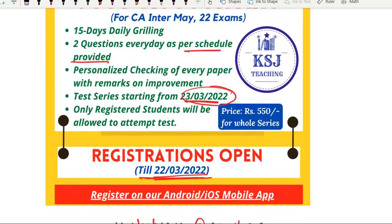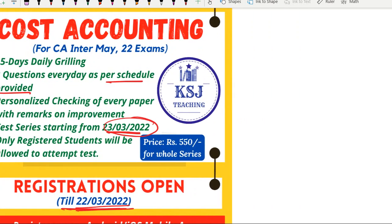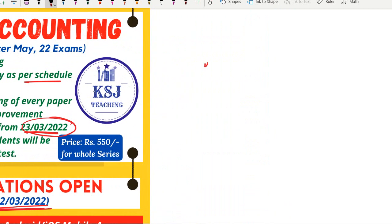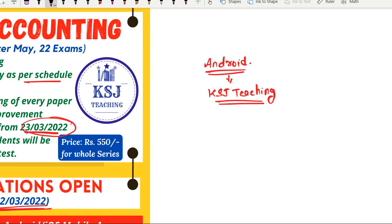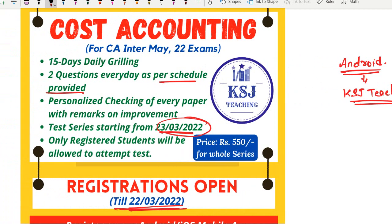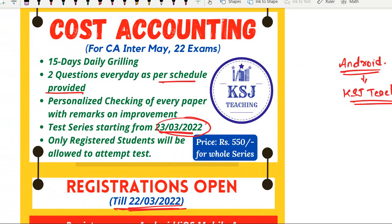How to register for the test series? You have to register on our mobile app. You can download the Android app or the iOS app. All links — the registration links, Android link, and iOS app link — are provided in the video description. For Android users, go to the Google Play Store and search for KSJ Teaching. In the app, go to the store section and find the cost accounting 15-day challenge course. Make the payment there and you are registered.